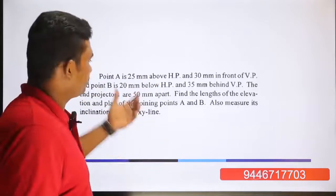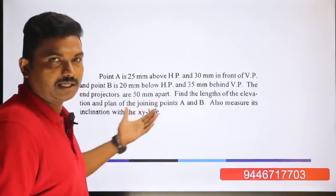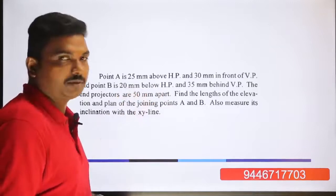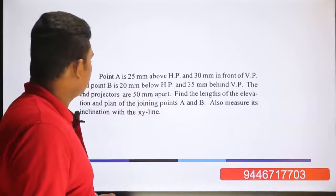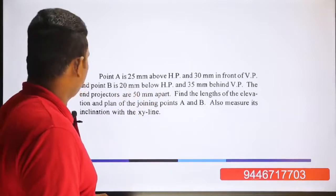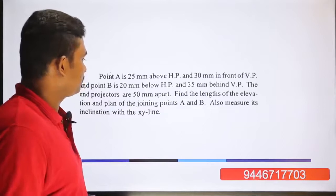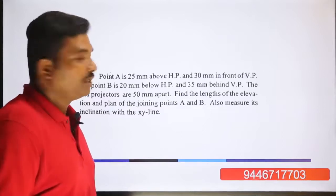End projectors are the two projection lines. This distance is 50mm. Find the length of the elevation and the plan of the line joining points A and B.